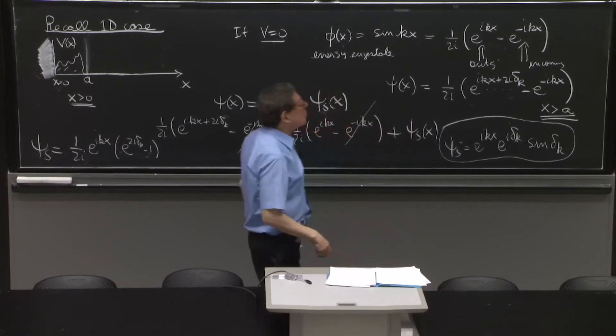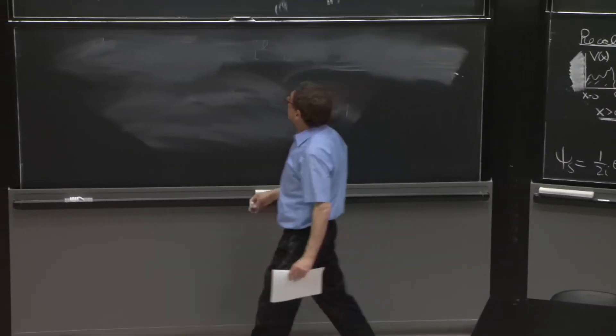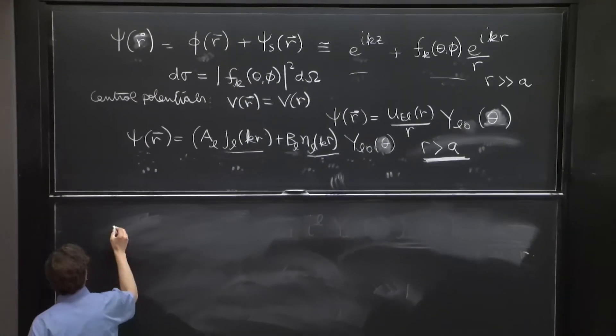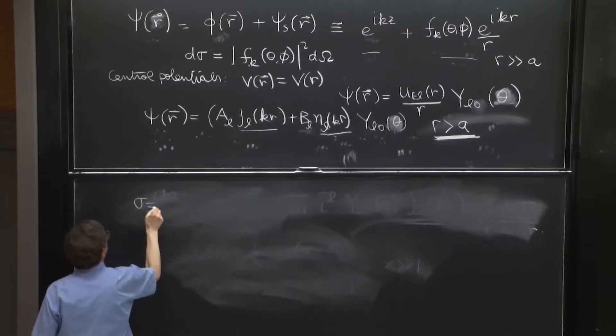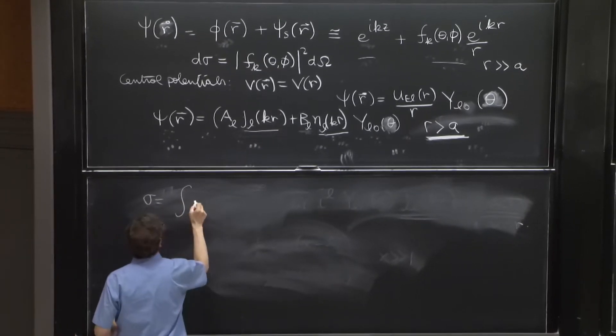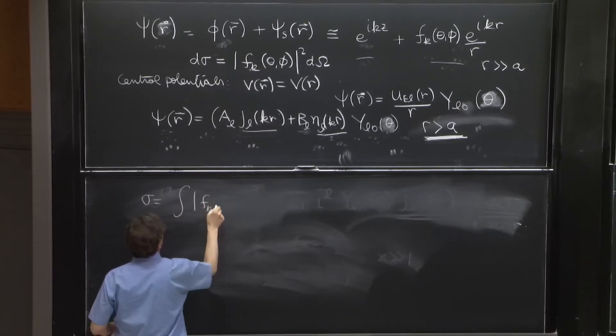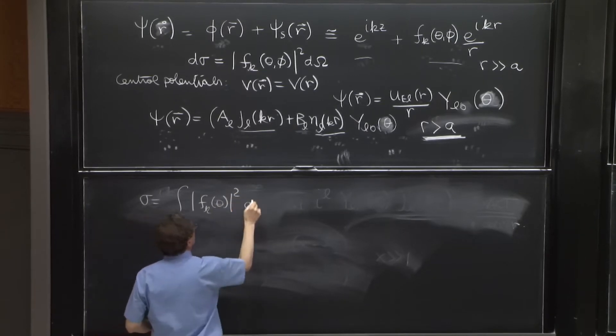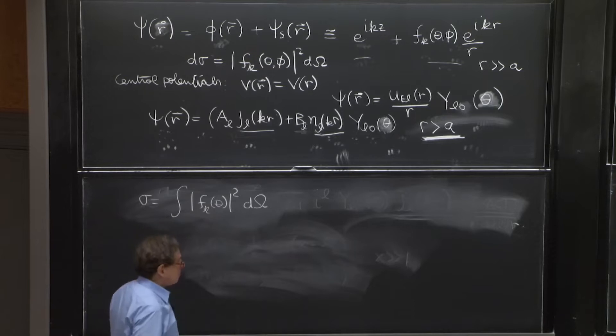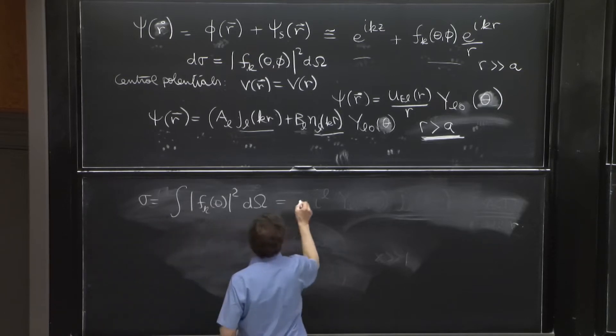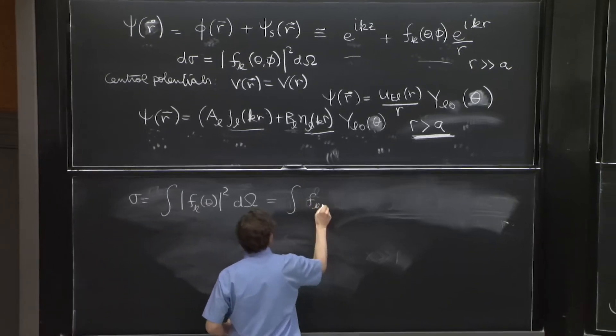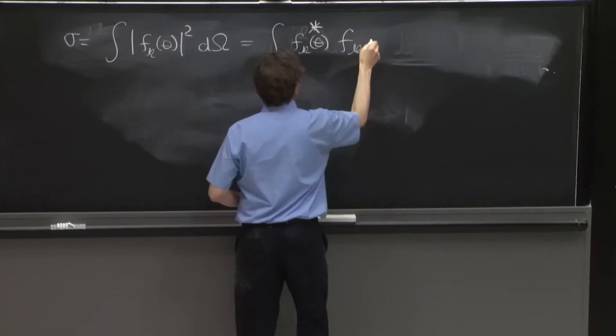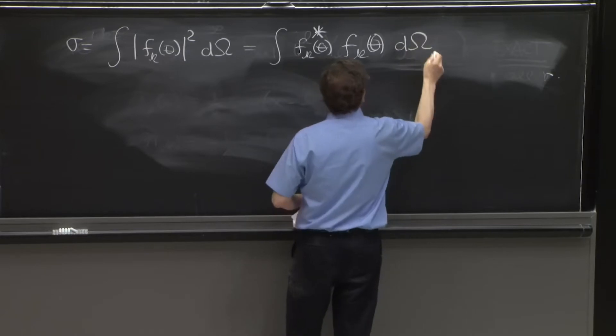So one simple formula was that the total cross-section, we wrote the formula for the differential cross-section, but the total cross-section is the integral of fk of theta, in this case, d omega. So this is the integral of fk of theta star, fk of theta, d omega.